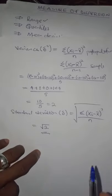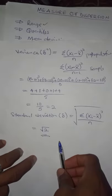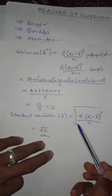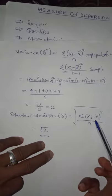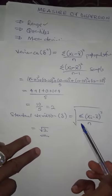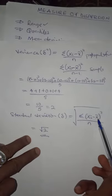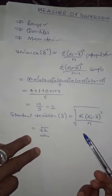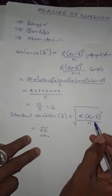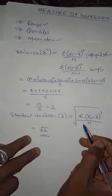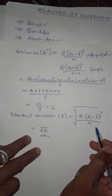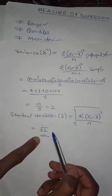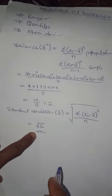For standard deviation, it is simply the square root of the variance. The formula is the square root of the summation of (x minus X-bar) squared over n for population standard deviation. For sample standard deviation, it is the square root of the summation of (x minus X-bar) squared divided by n minus 1. Since our variance is 2, our standard deviation is the square root of 2. This is all I have for you today — thank you for watching, do have a nice day.